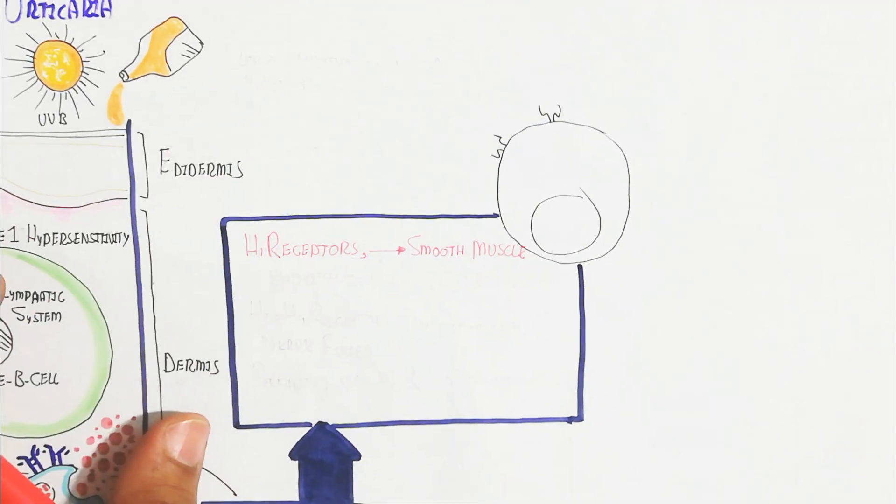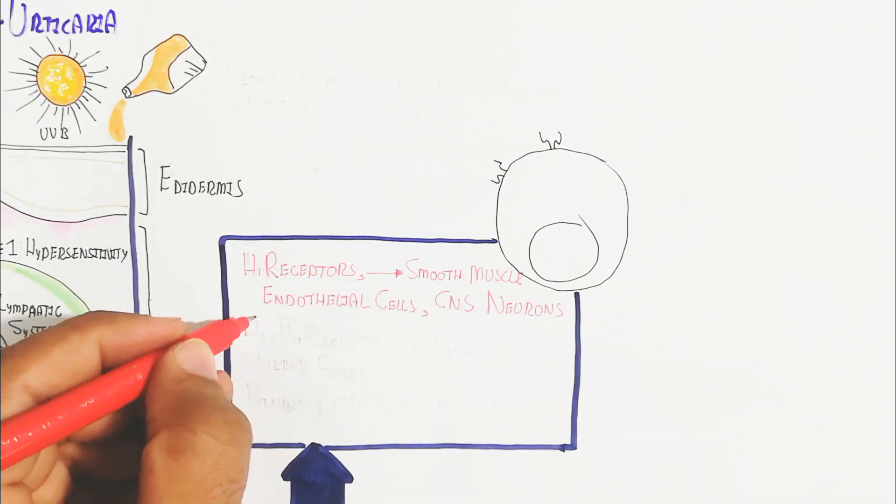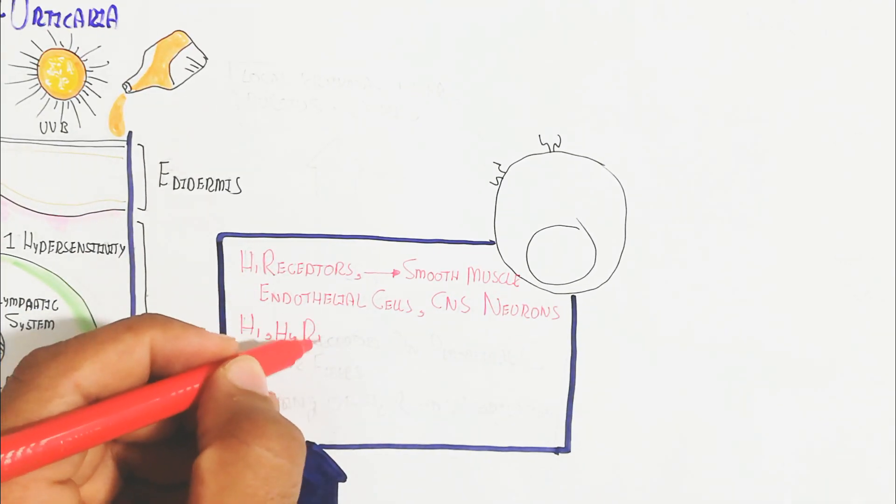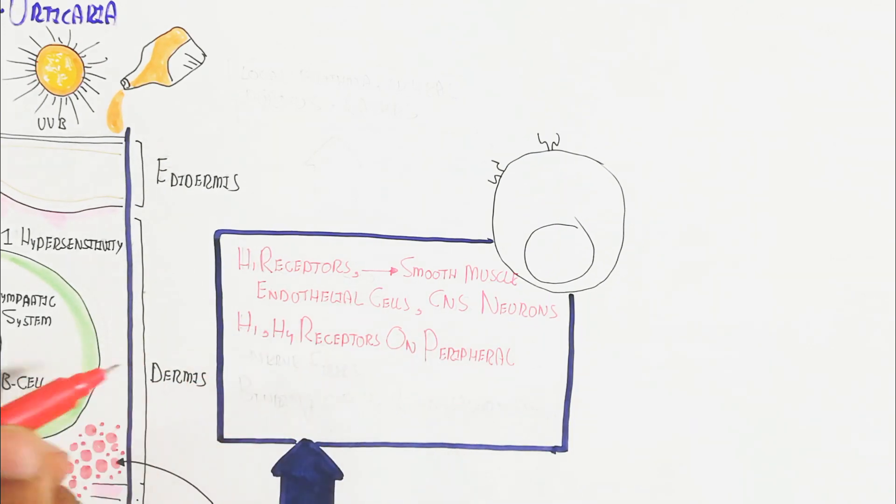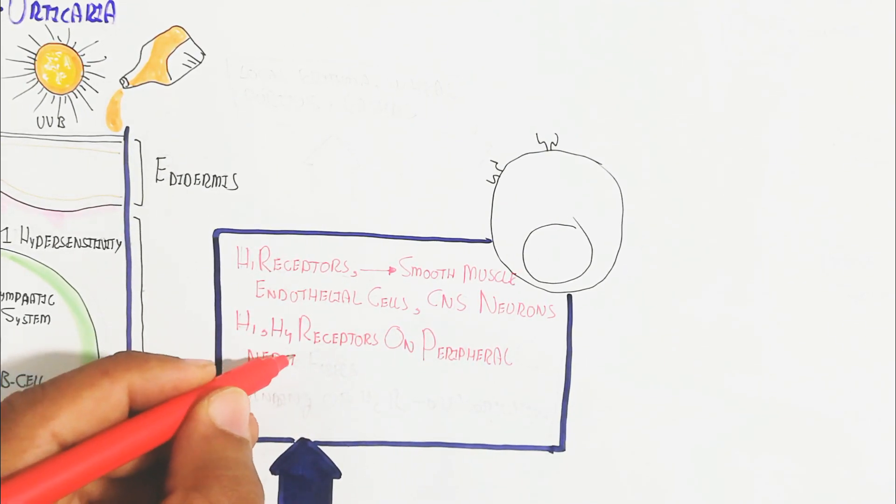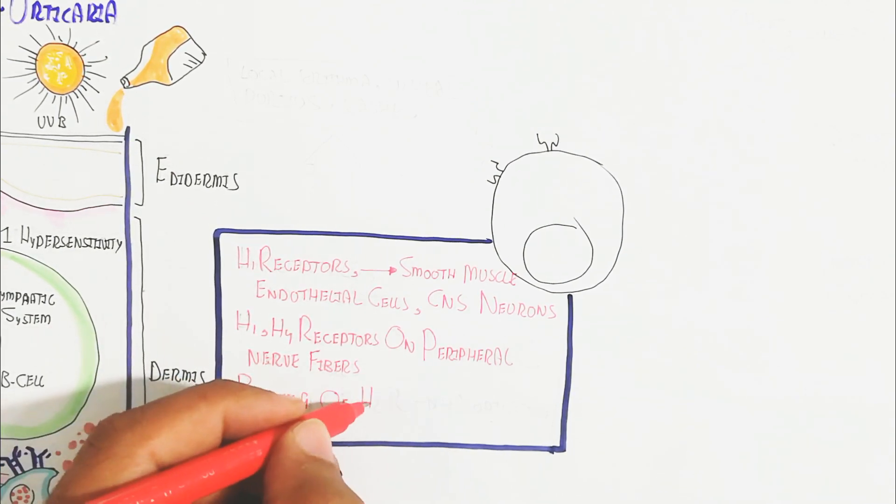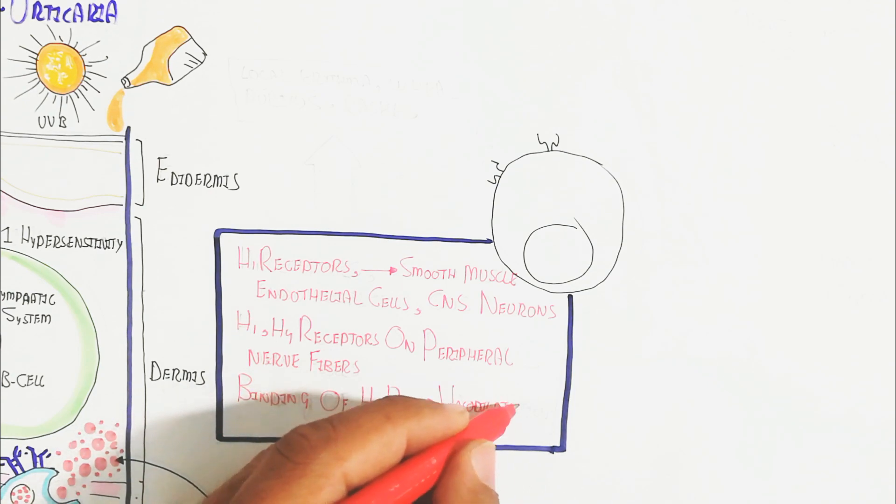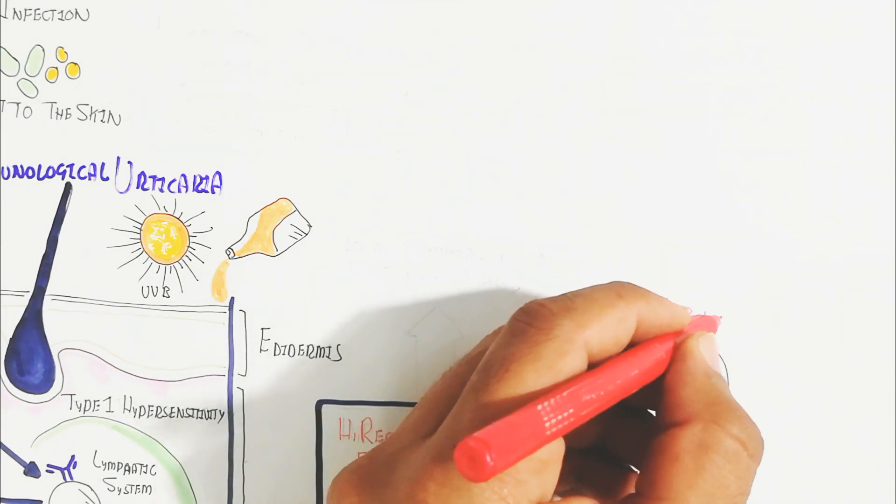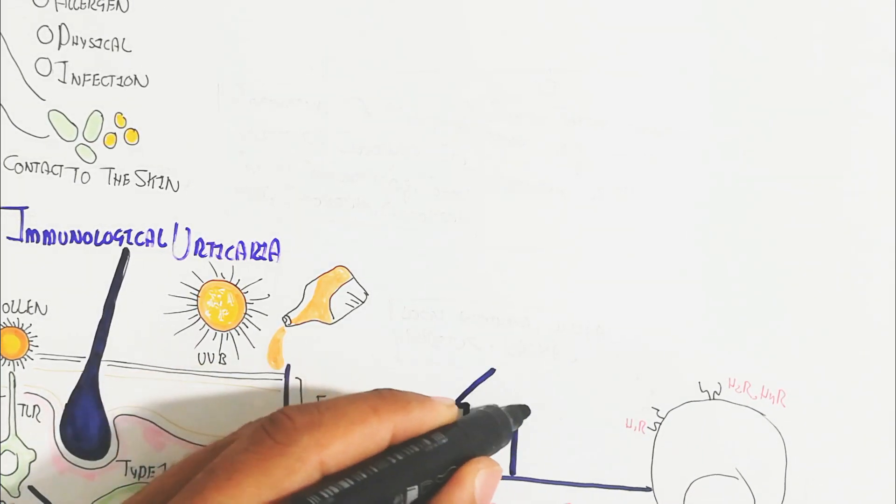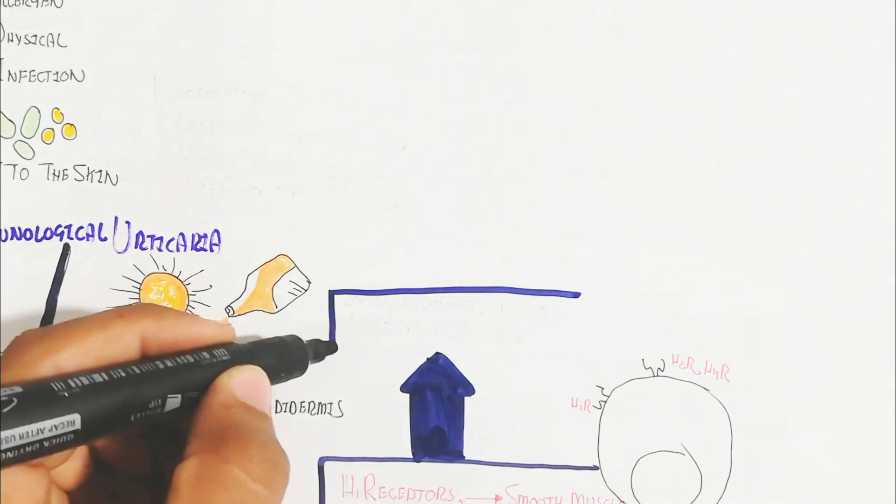And constriction of the muscles like the digestive system or the bronchioles, basically the lungs. On the other hand, the H1 H4 receptor on peripheral nerve fibers - binding of H2 receptor causes vasodilation. In this way, local erythema and wheal pruritus rashes can occur by this mechanism.